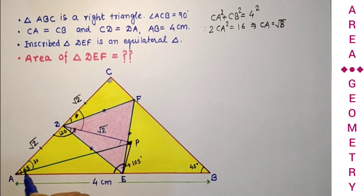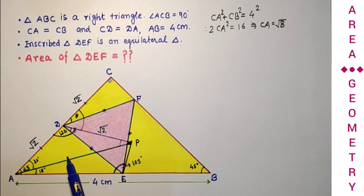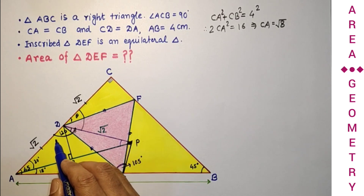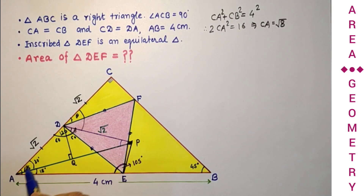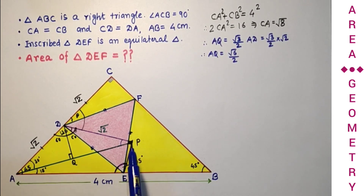Since the full angle at A in the quadrilateral is 45° and the angle DAP is 30°, the remaining angle PAE is 15°. We draw DQ perpendicular to AP. Since DQ is common and DA = DP, the two triangles DQA and DQP are congruent, giving AQ = QP. In the 30-60-90 triangle, AQ is opposite the 60° angle, so AQ = (√3/2) · √2 = √(6)/2. Since AP = 2·AQ, we get AP = √6.